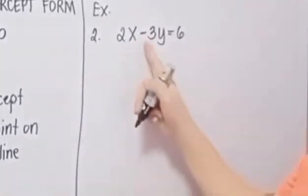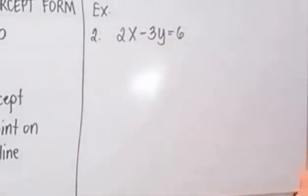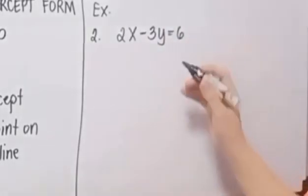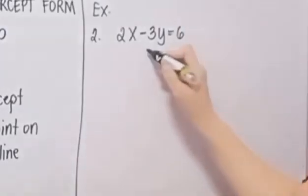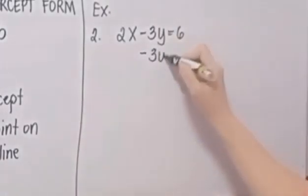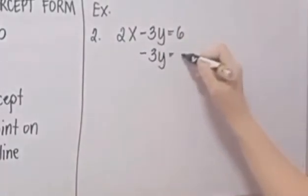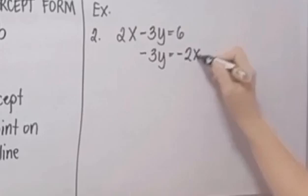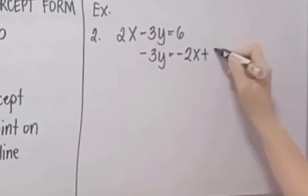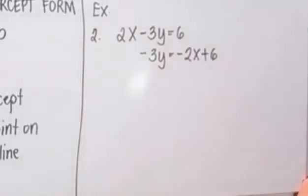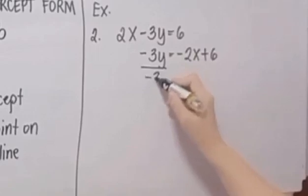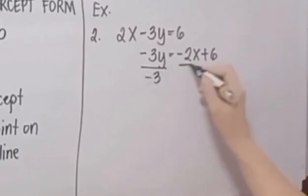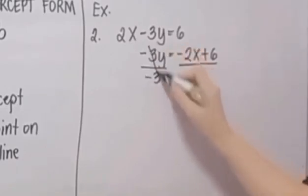Next example: we have 2X minus 3Y is equal to 6. Let's change it to slope-intercept form. We have negative 3Y is equal to negative 2X plus 6. Then we divide both sides by negative 3.